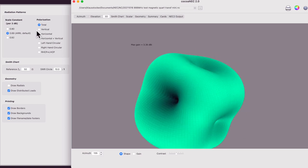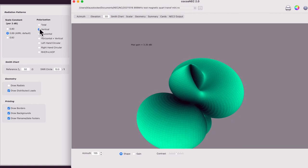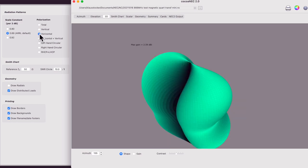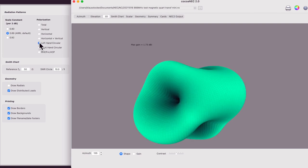However, we can analyze all the components individually. Let's see the vertical components only. And then, the horizontal components. And then, the left and the right-handed circular components.